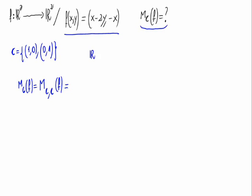So our situation now is R square to R square, f, c and c. Having a look at the first base, because of the definition of a linear matrix, we have to calculate the image of the first vector of the base c, the (1, 0). This is x and this is y, and let's substitute in the analytic expression of f. So 1 minus 2 times 0 minus 1. This is (1, -1).